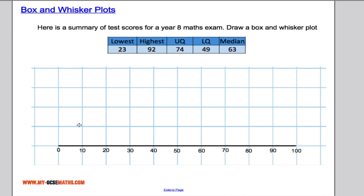So let's take a look at how we can draw a box and whisker plot. We've got the summary of test scores for a year 8 maths exam and we're asked to draw a box and whisker plot. So from this data here I can see that the lowest mark in the class was 23.